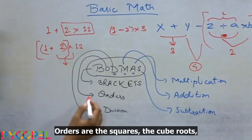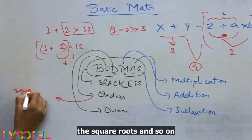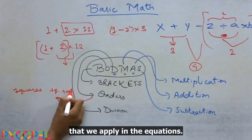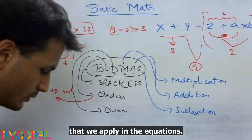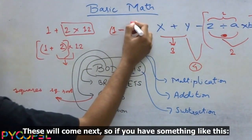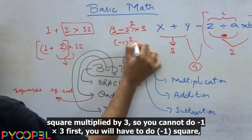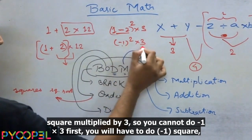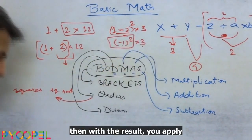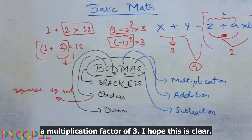And orders are the squares, the cube roots, the square roots and so on that we apply in the equations. These will come next after the brackets, so if you have something like this, 1 minus 2 square into 3, so you do the bracket thing first, it gives you minus 1 square into 3, so you cannot do minus 1 into 3 first, you will have to do minus 1 square, then to the result you apply a multiplication factor of 3. I hope this is clear.